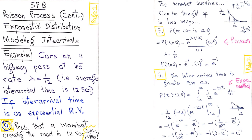Welcome to lecture number eight. We are studying the Poisson process and will continue studying it in this lecture. In the last lecture we modeled inter-arrival time using the exponential distribution. Today we solve an example: we have cars on a highway and they pass at a rate of 1/12 per second.